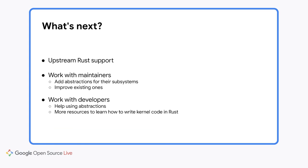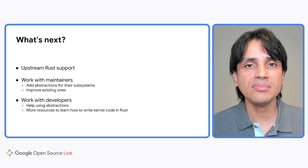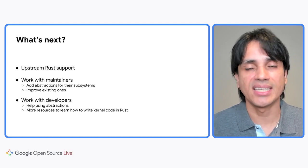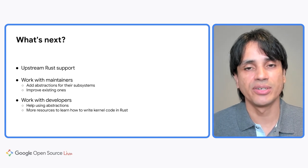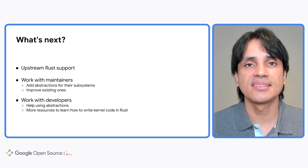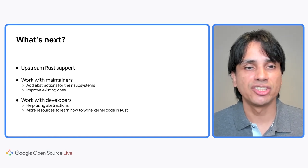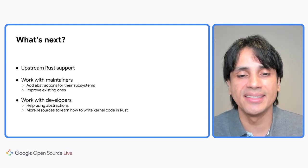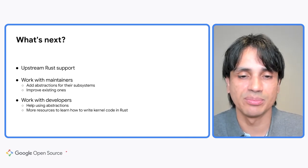The last thing I'd like to tell you about is what we're doing next. The first thing is upstreaming this Rust support. At the moment, we have a clone of mainline and we add our patches to that clone — it's available on GitHub for anyone to clone and contribute. We keep this up to date with mainline, rebasing every time there's a new release. What we want eventually is for this to be upstreamed into the mainline kernel, which will mean that anybody who wants to build Rust code can get the support automatically by cloning any version of the mainline kernel — and kernels that are derived from that, which is basically most kernels.